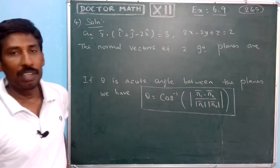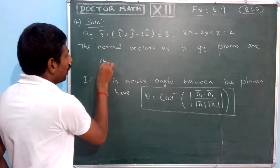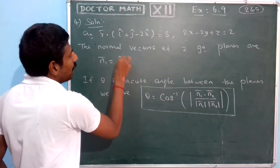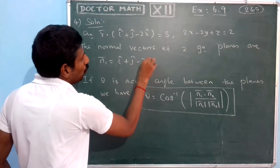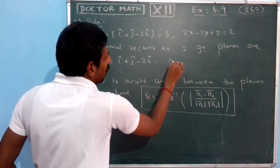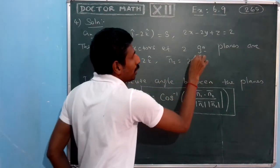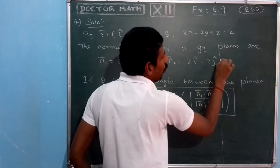We are drawing two planes. We are drawing N1. Here is the I cap plus J cap minus 2K cap. Here we are drawing N2 vector. Here is 2I cap minus 2J cap plus K cap.